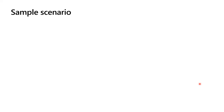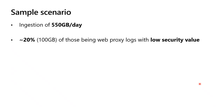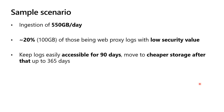Let's now look at a sample scenario. We're expecting to ingest around 550 gigabytes per day. Of those 550, we expect around 20% — about 100 gigabytes per day — to be web proxy logs that have low security value. I still want to keep them in the SOC environment so analysts have access to them, but maybe I don't want to run detections on those logs. We want to keep those logs easily accessible with full KQL for 90 days, then move after that to a cheaper storage tier for up to 365 days.